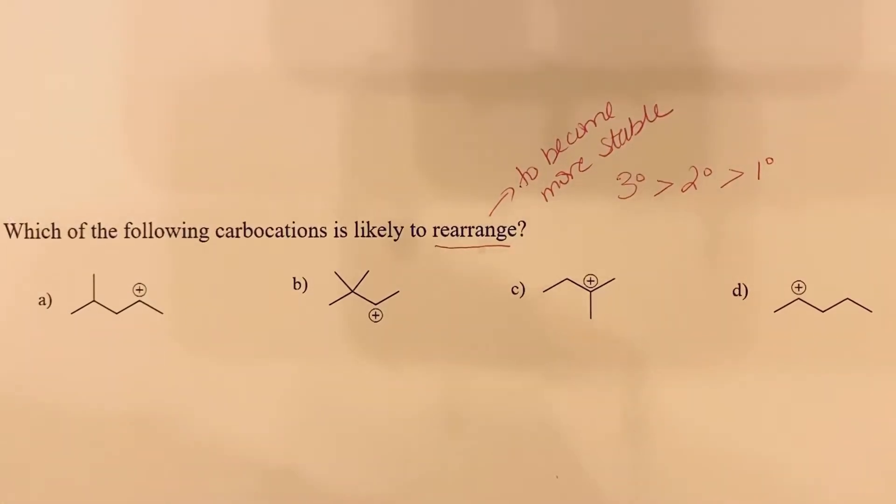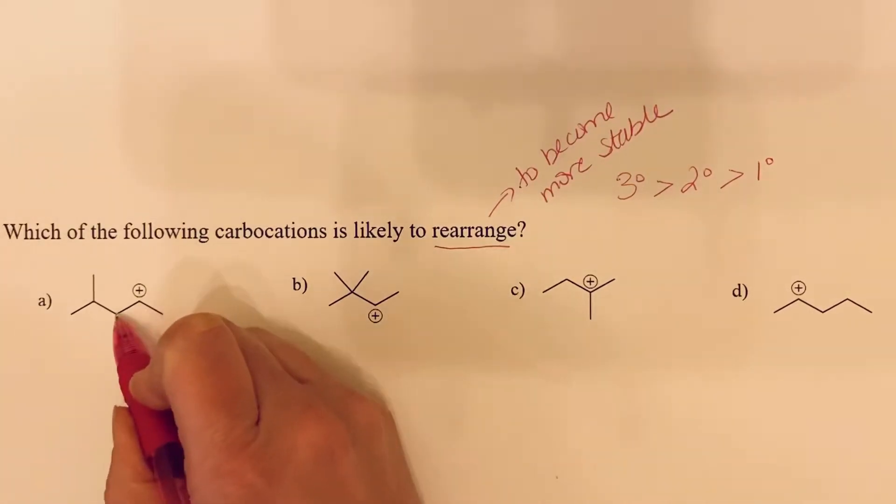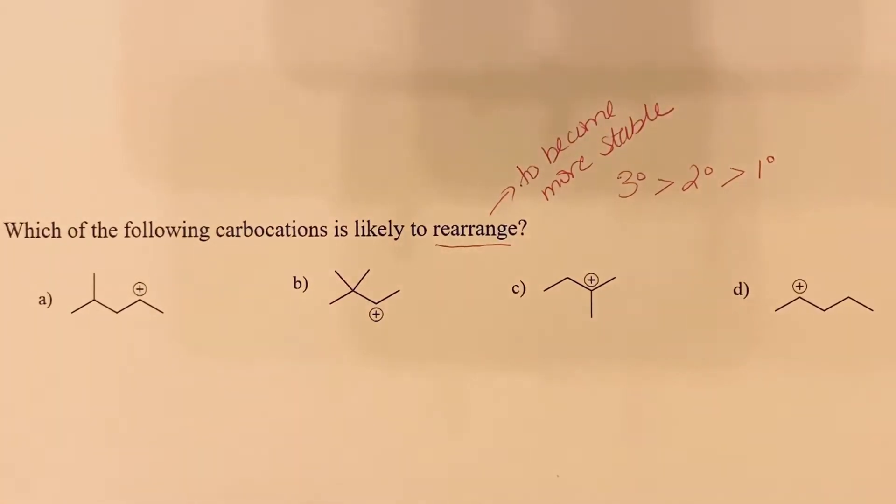So we first need to look at each of these carbocations and decide how they are substituted. If we look at the first one, we see bonds to two other carbon atoms, meaning that this is a secondary carbocation.